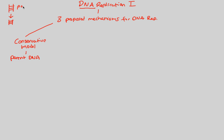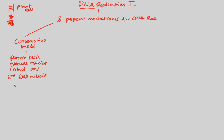Always imagine the parent DNA as a basic red ladder. The parent DNA molecule remains intact, meaning that it doesn't change at all. In the conservative model, it remains intact and the second DNA molecule — the one we're trying to make — is constructed as an entirely new DNA strand.